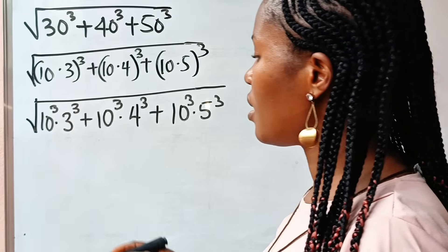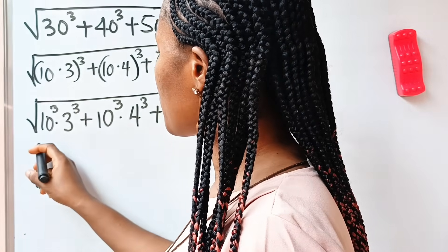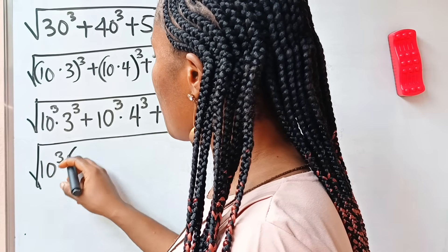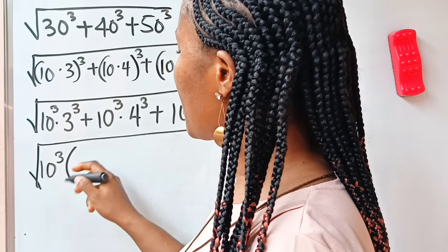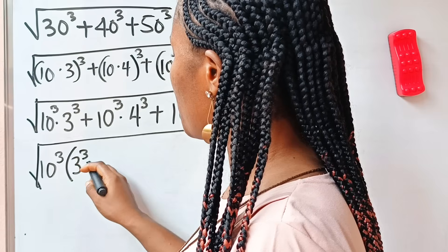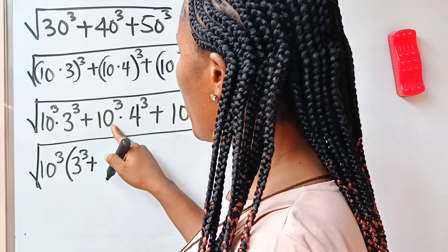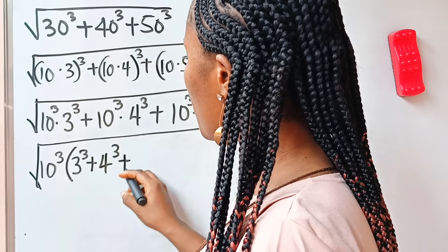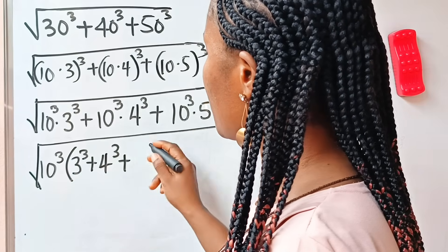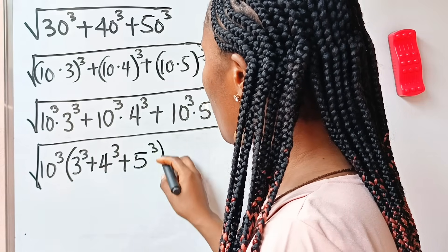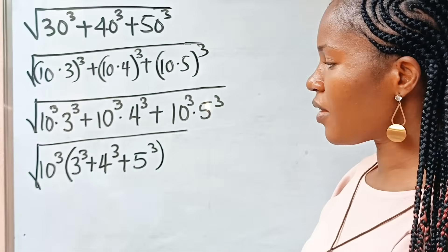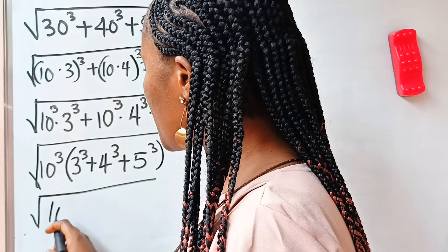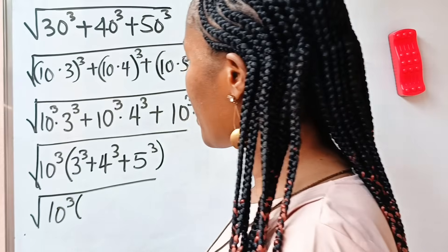Put them together. So we have the square root of 10 to the power of 3 in brackets. When this is divided by this, 3 to the power of 3 will remain. When this is divided by this, 4 to the power of 3 will remain. When this is divided by this, 5 to the power of 3 will remain. So we have the square root of 10 to the power of 3 in brackets.